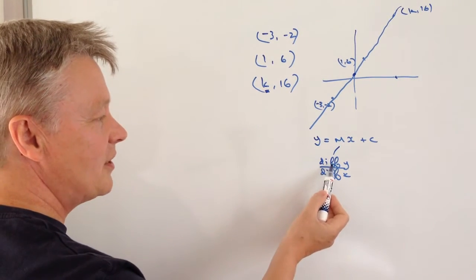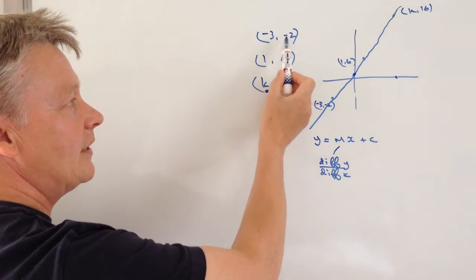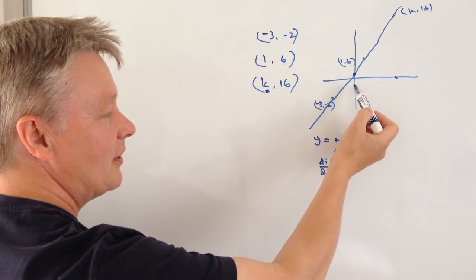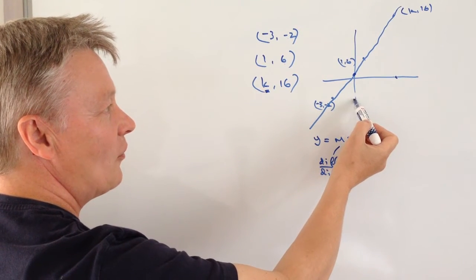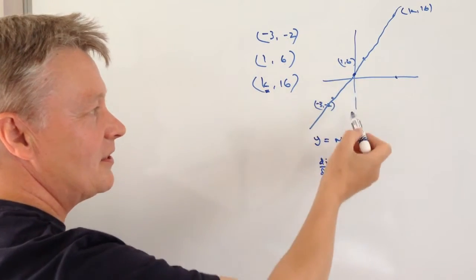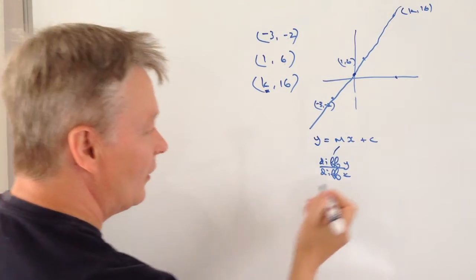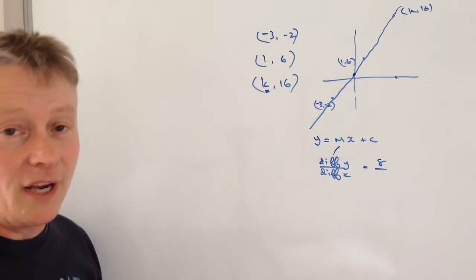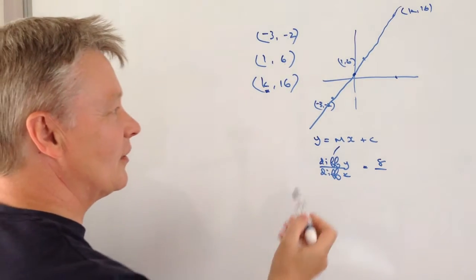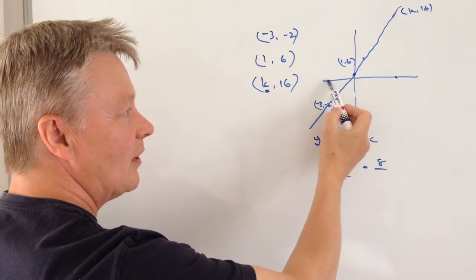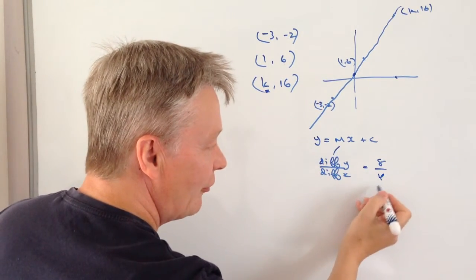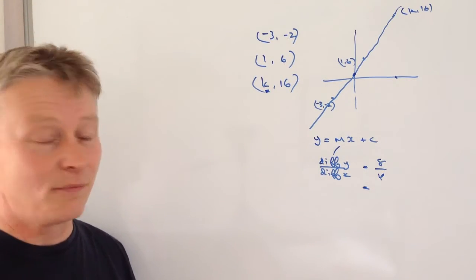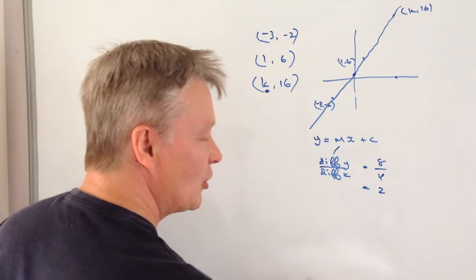The difference in Y: we're going from -2 to 6, so that's a difference of 8. The difference in X is -3 to 1, which is a difference of 4. Very helpfully, these usually work out as a whole number or a simple fraction, so that's going to be a gradient of 2.